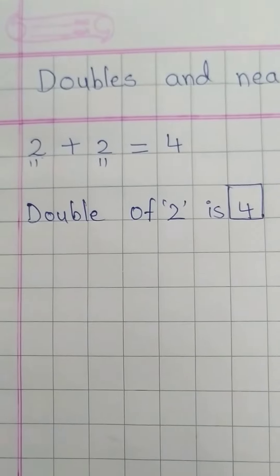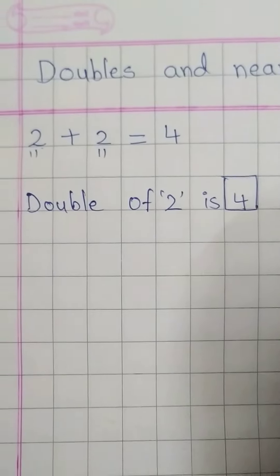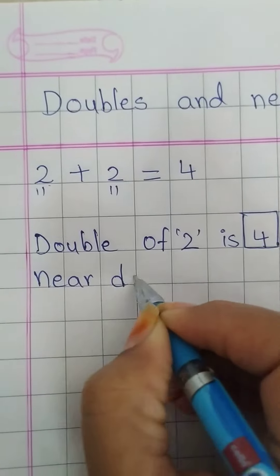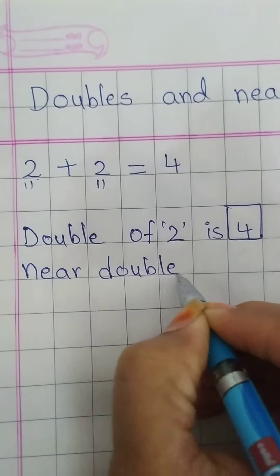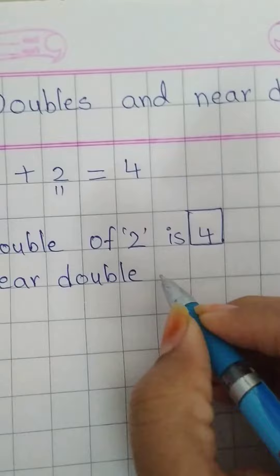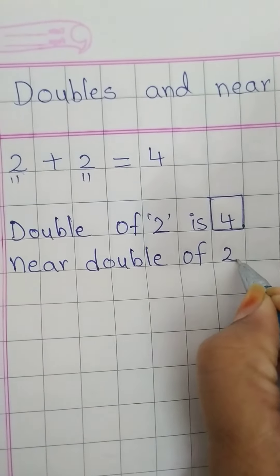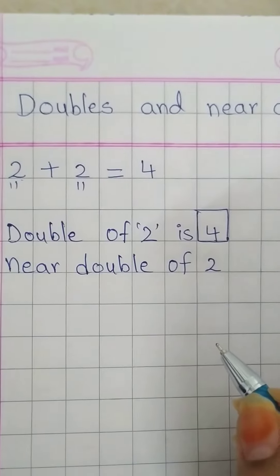Now, what is near double? N-E-A-R near. D-O-U-B-L-E double. Near double of 2. Don't get confused.